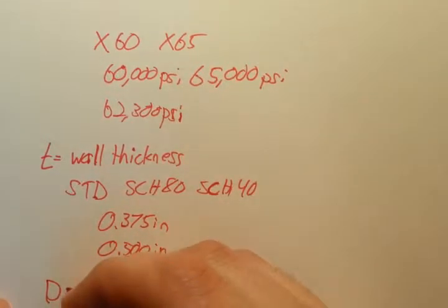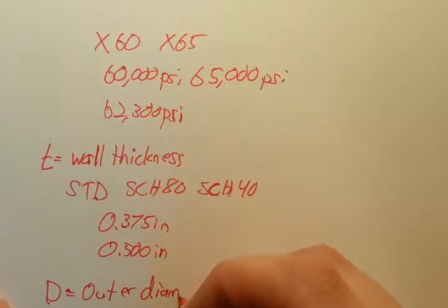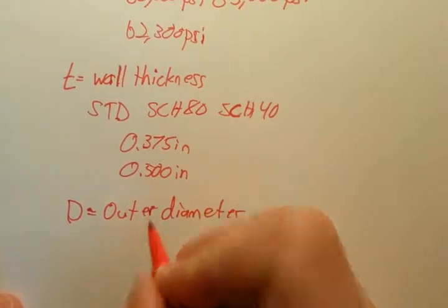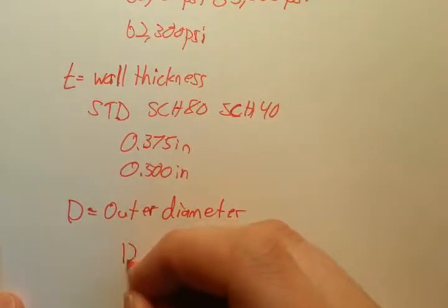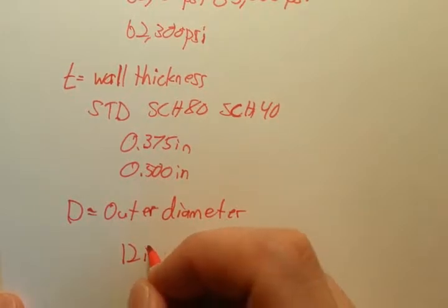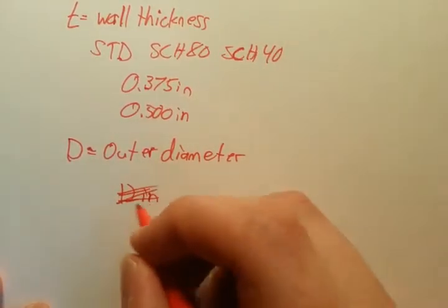That takes us to capital D, which is outer diameter of the pipe, which is not necessarily the same thing as pipe size. So 12 inch and below, I believe maybe 14 inch, if you say you want 12 inch pipe, the outer diameter is not 12 inches. I think it might be 12.75.